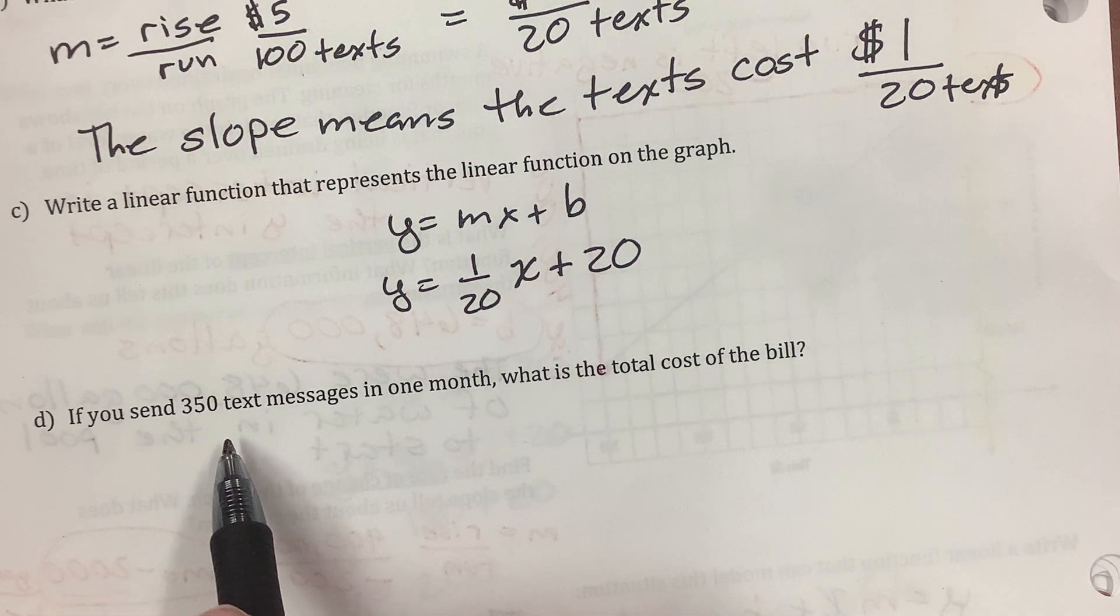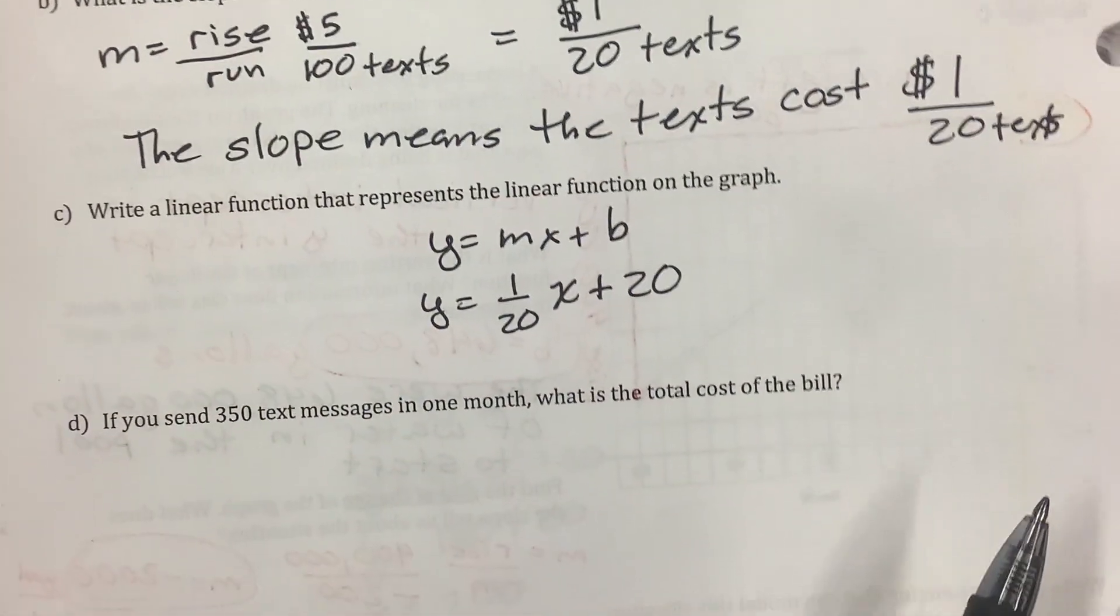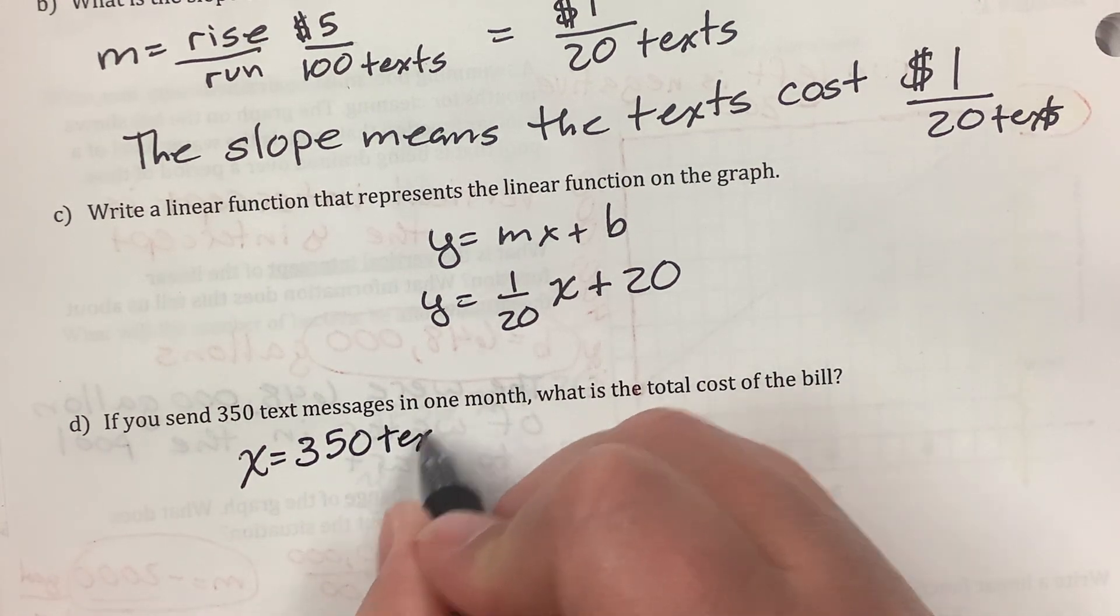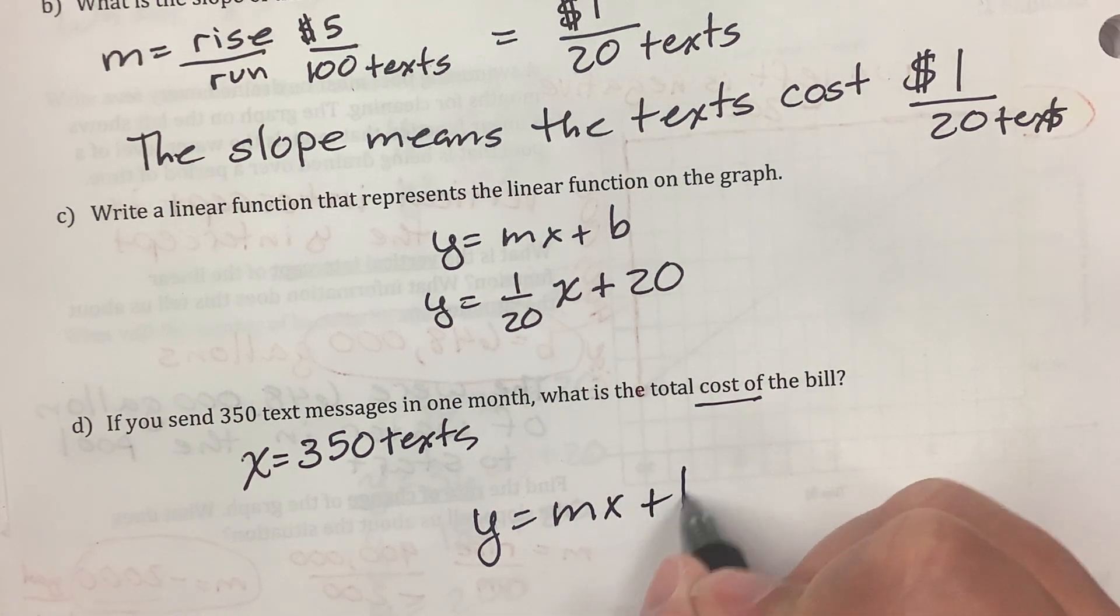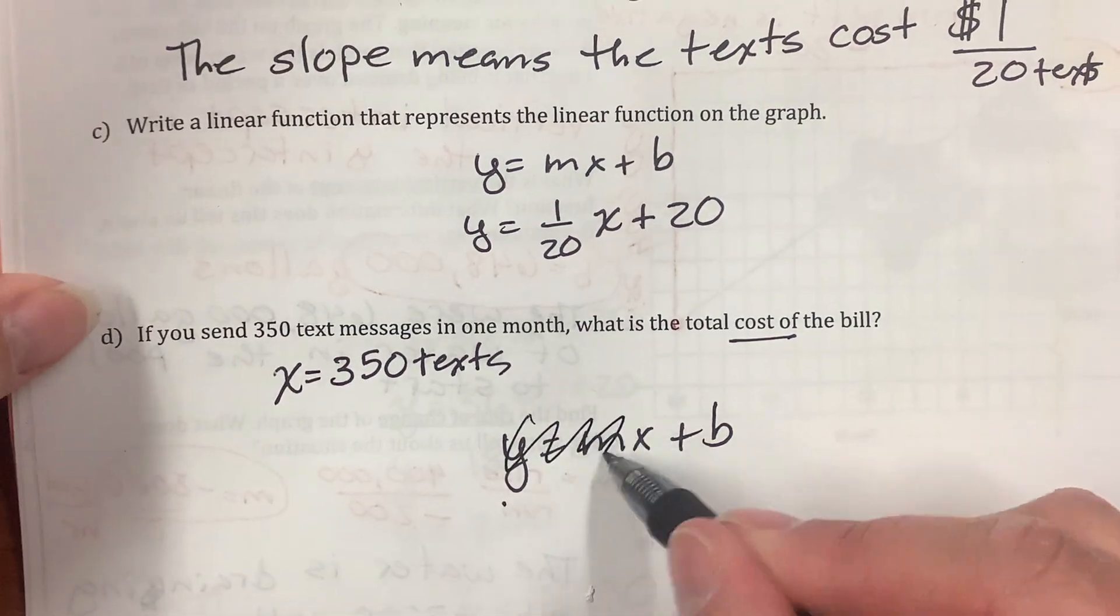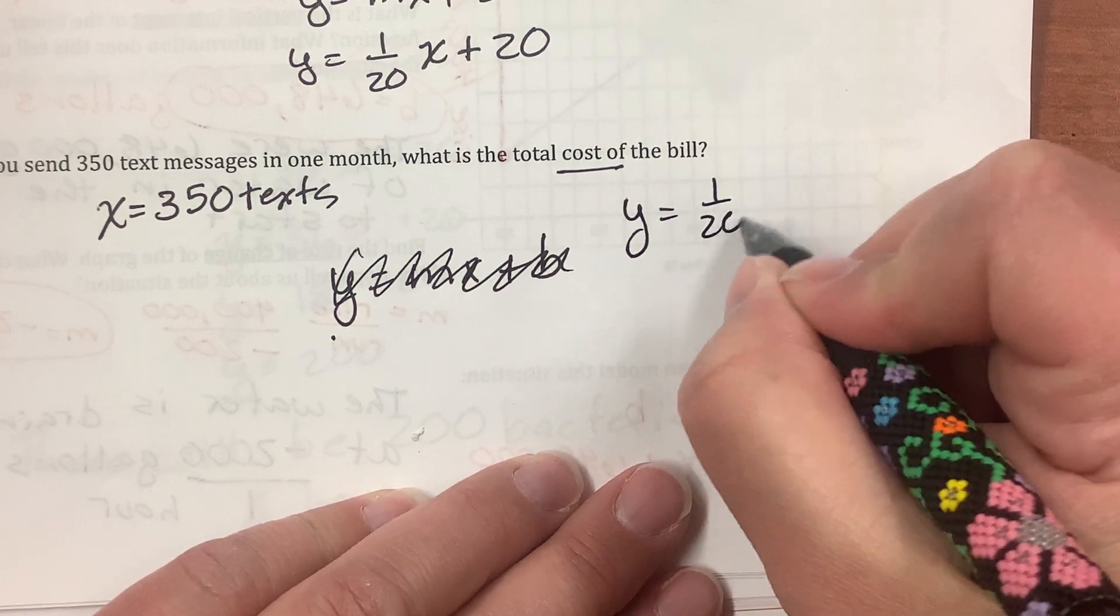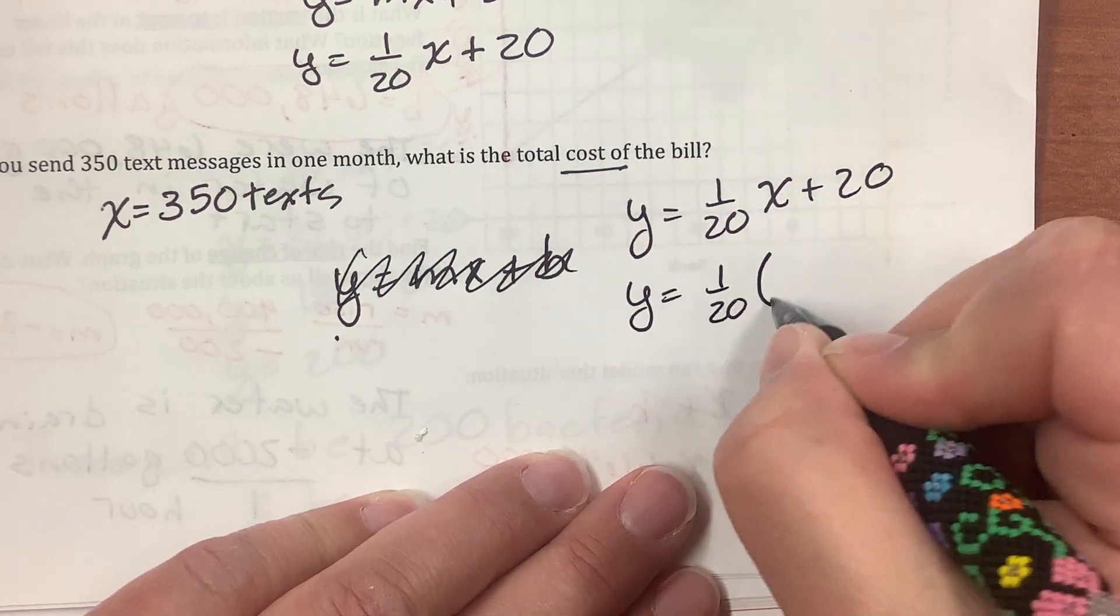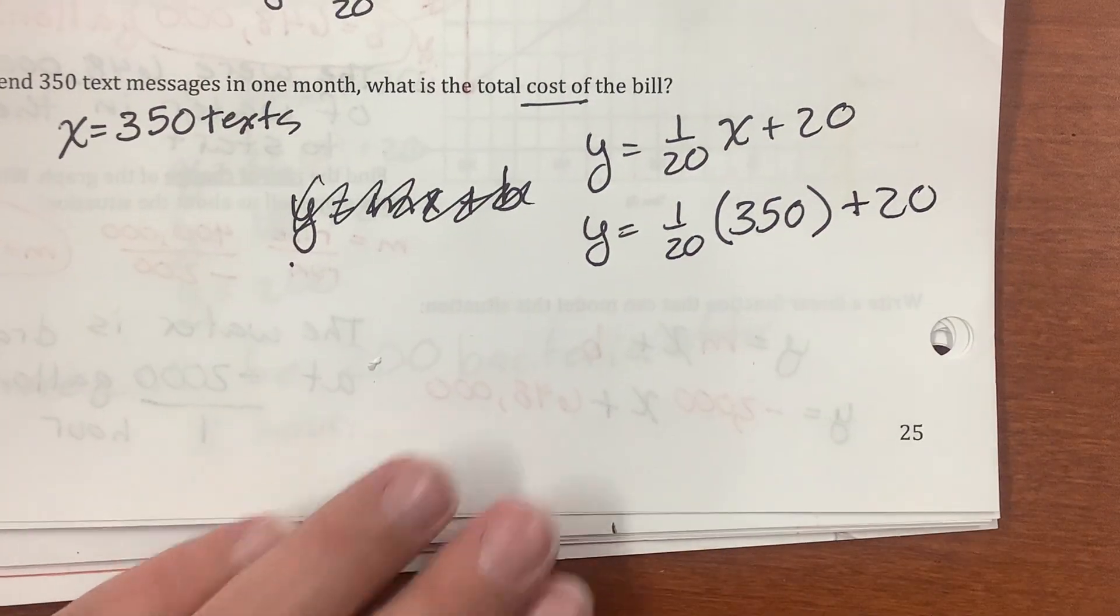If you send 350 text messages, text messages is x. It's on the x line. So, how much would it cost? So, this is x equals 350 messages or texts. What is the cost? Cost is y equals mx plus b. I need to use this. y equals 1 20th times x plus $20. y equals 1 20th times 350 plus the $20 fee.